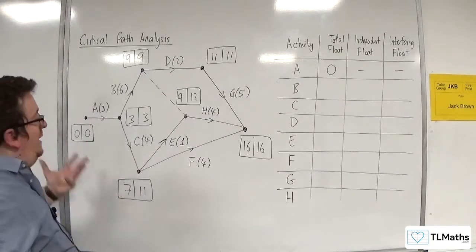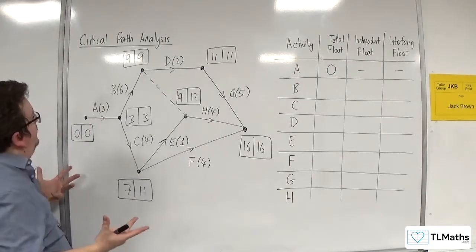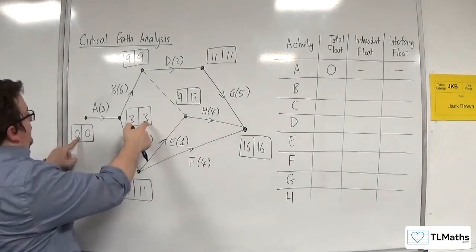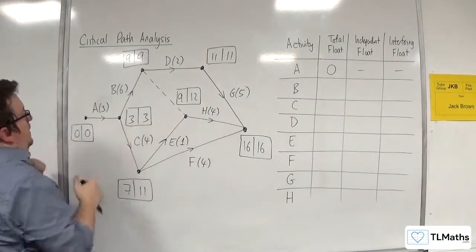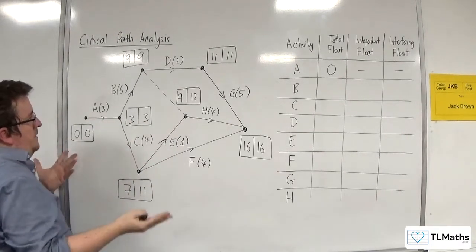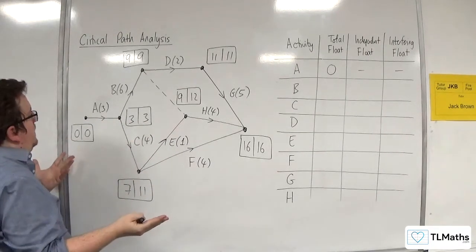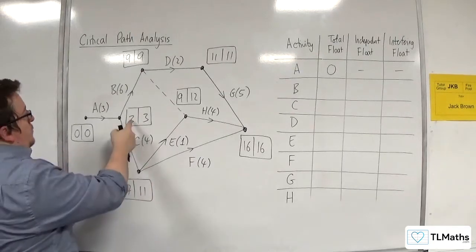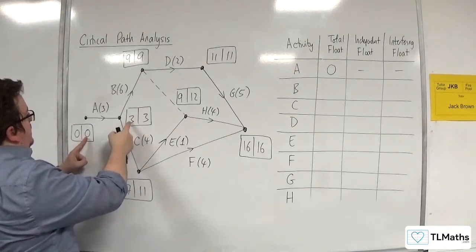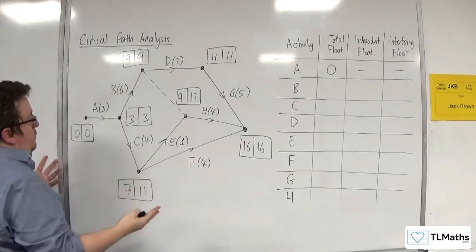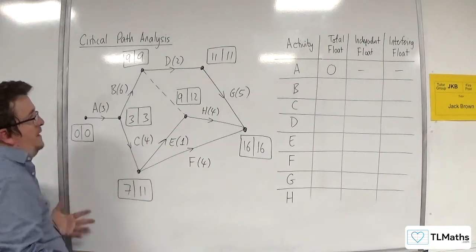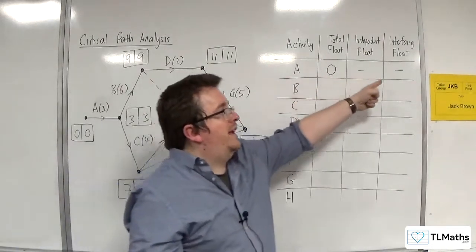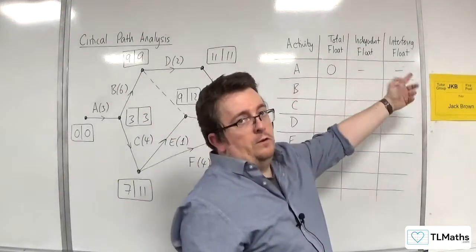The calculation for the total float: 3 take away 0, take away 3 equals 0. For the independent float: 3 take away 0, take away 3 equals 0. And then 0 take away 0 to get your interfering float, which is also 0.